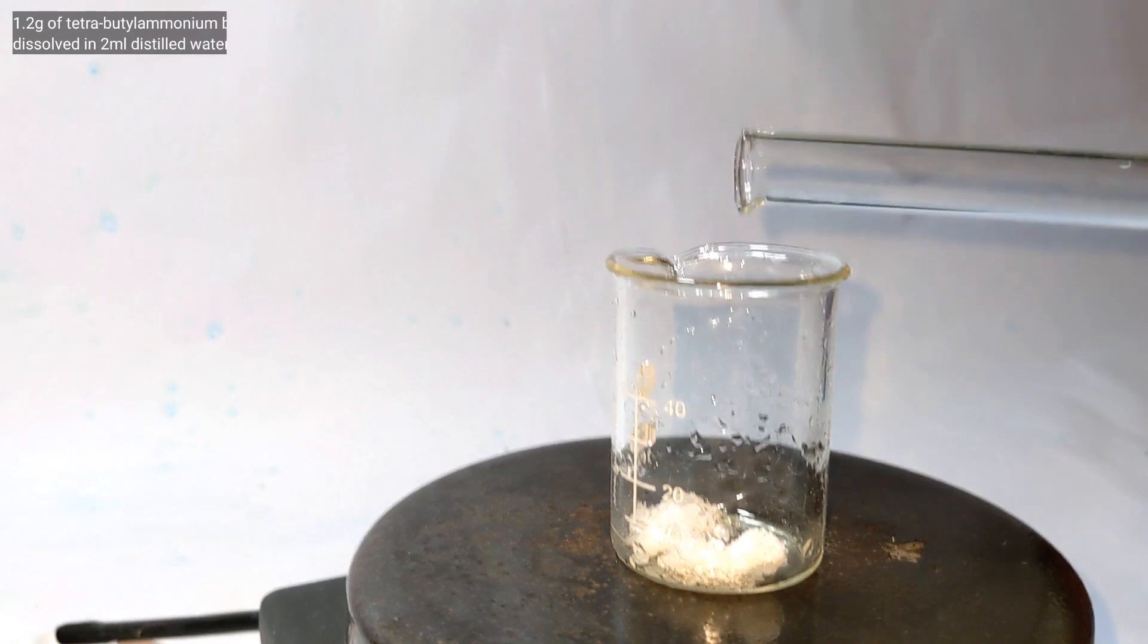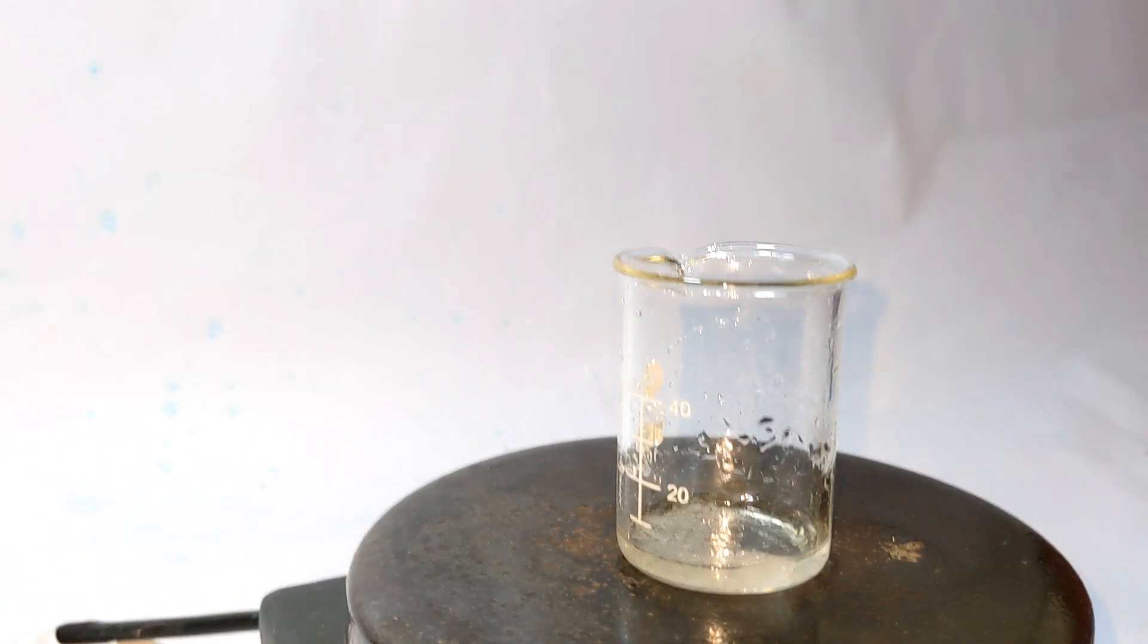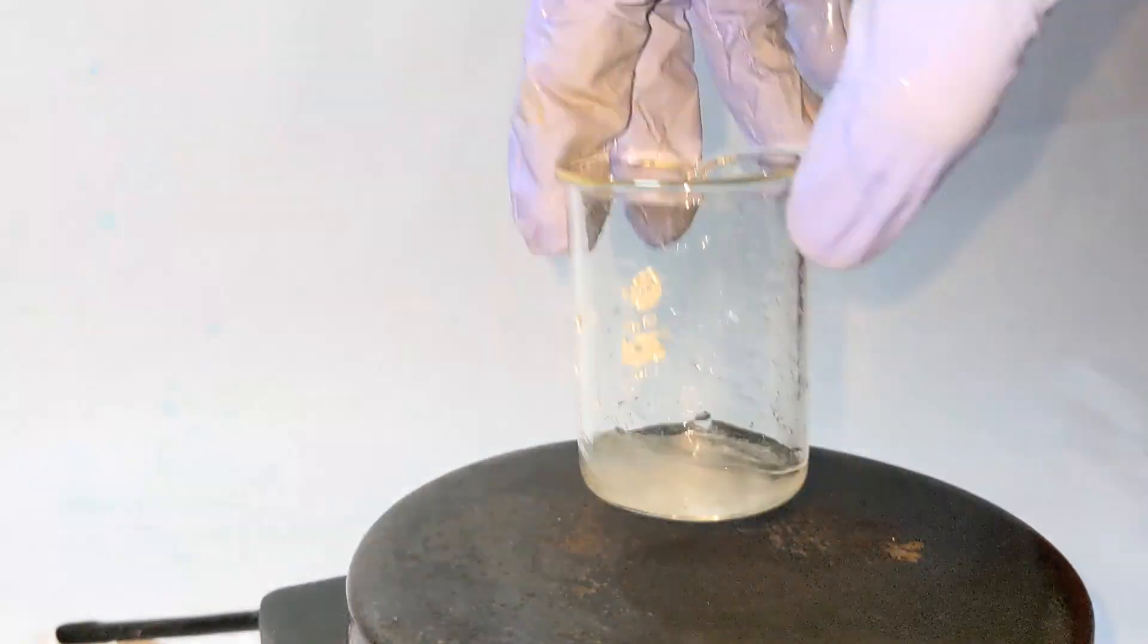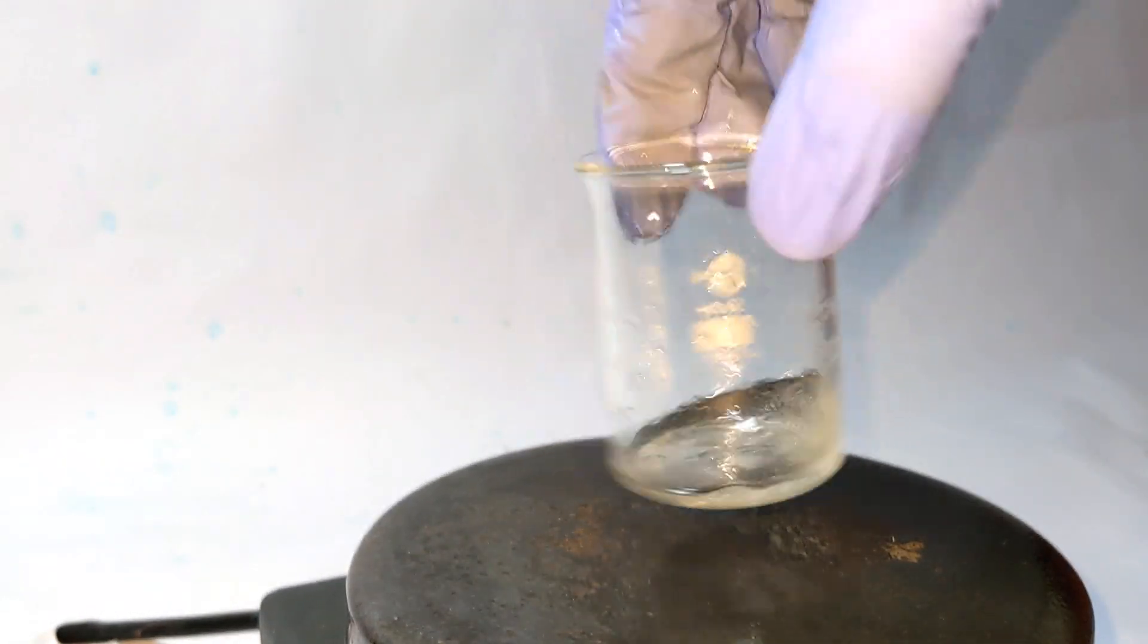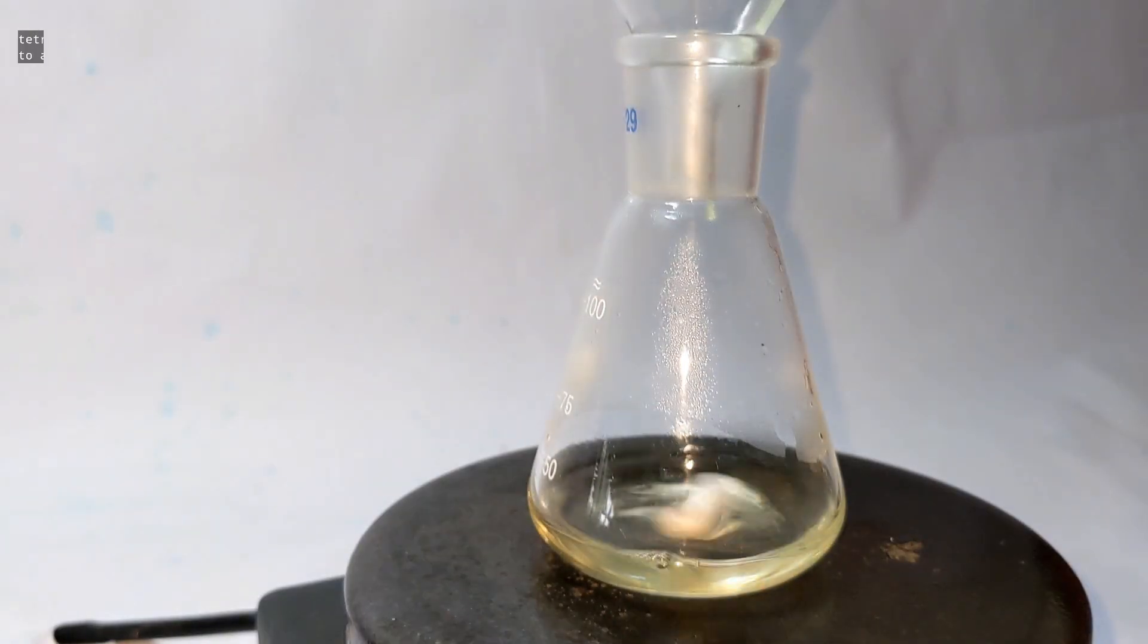Now we make a solution containing 1.2 grams of tetrabutylammonium bromide in 2 milliliters of distilled water. The compound is extremely soluble in water and the resultant solution is colorless and clear.